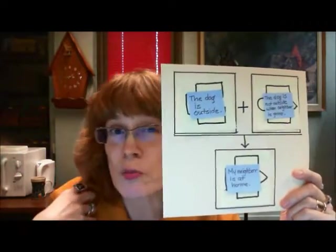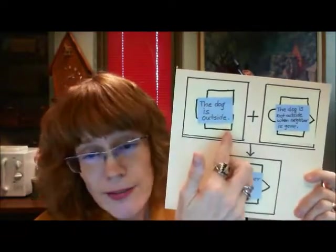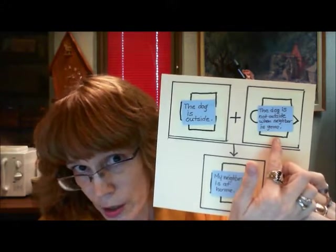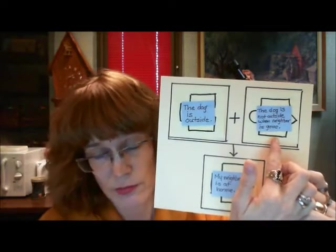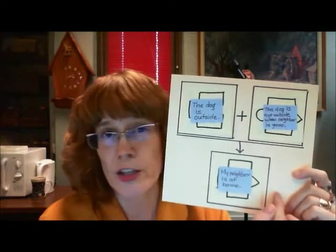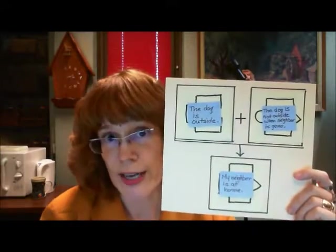I could also use but. The dog is outside. But, the dog isn't outside when the neighbors are gone. Therefore, my neighbor must be at home. I could use either and or but for the plus. And, that's using a conclusion indicator expression going down.